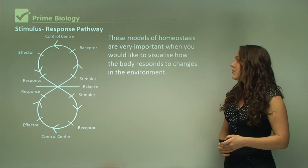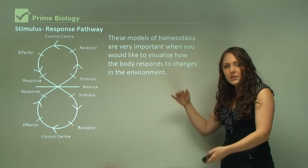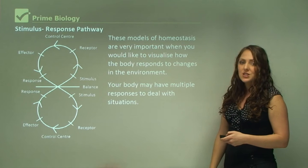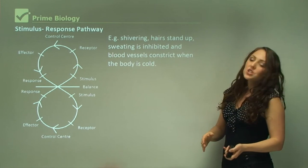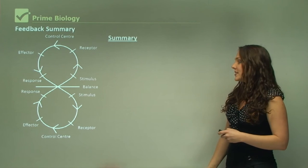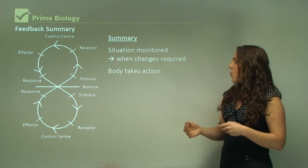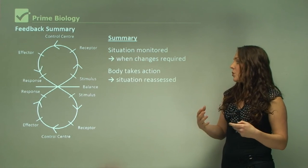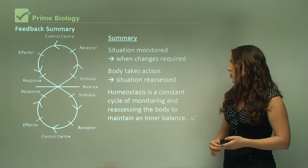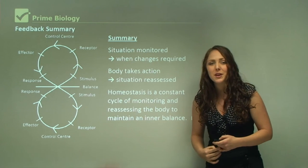These homeostasis models are very important for visualizing how the body responds to environmental changes. The feedback model can be used for multiple types of stimuli, and the body may have multiple responses — for example, shivering, hair standing up, sweating inhibited, and blood vessels constricting when cold. In summary: the situation is monitored, the body takes action, the situation is reassessed, and homeostasis is a constant cycle of monitoring and reassessing to maintain inner balance.